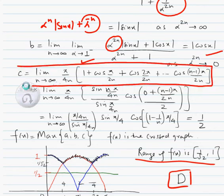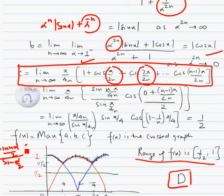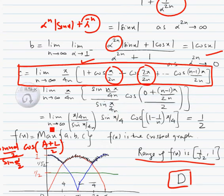c is a series — you can see this series is a sum of cosine terms where the angles are in arithmetic progression. The angles form an AP with common difference π by 2n. Now we apply the formula: the sum of cosine terms where angles are in AP is sin(Nd/2) over sin(d/2), multiplied by cos of the average of the first and last angle — that is, first angle plus last angle divided by 2. We apply this formula and get the expression.